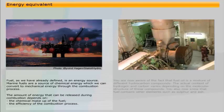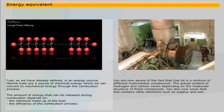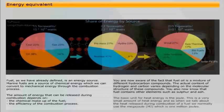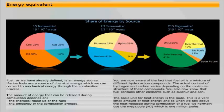You are now aware of the fact that fuel oil is a mixture of different hydrocarbon compounds. The actual content of hydrogen and carbon varies depending on the molecular structure of these compounds. You also now know that fuel contains other elements such as sulfur and ash. The basic unit for heat energy is the joule. This is a very small amount of heat energy and so when we talk about the heat released during combustion of a fuel, we normally use the megajoule, which is one million joules.